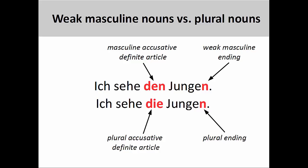So why is this important? Sometimes, if we don't pay close attention to clues that German sentences provide us, we may misinterpret what we are reading. For example, in the sentence at the top of the screen, the definite article den indicates a masculine singular noun in the accusative case, and the -en ending indicates a weak masculine noun. In the sentence below, however, the definite article die indicates a plural noun in the accusative case, and the -en ending here indicates a plural noun: ich sehe die Jungen — I see the boys.